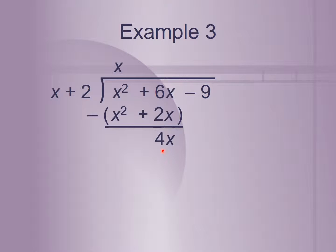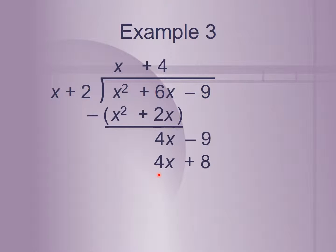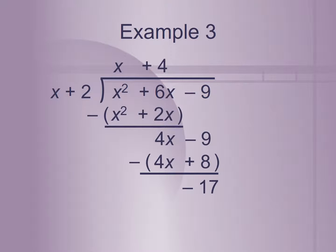Now, what can I multiply x by to get 4x? I multiply by positive 4, which becomes plus 4. Remember to bring down the next number. So 4 times x is 4x, and 4 times 2 is 8. We subtract: 4x minus 4x cancels, and negative 9 minus 8 is negative 17. There's nothing left to bring down, so our remainder is negative 17, and our answer is x plus 4 with a remainder of negative 17.